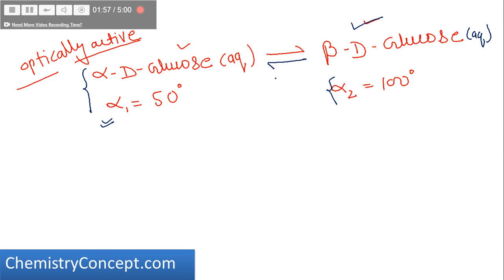That means the rotation, the degree of rotation of beta-D-glucose solution will decrease. And this change in degree of rotation when the glucose is left in aqueous solution is called mutarotation.